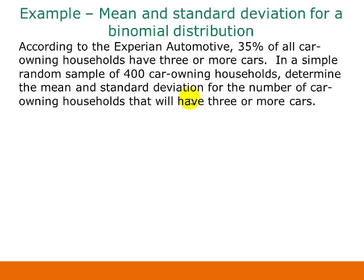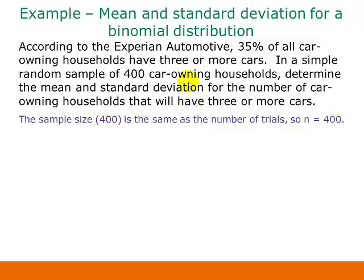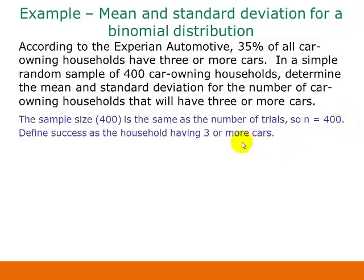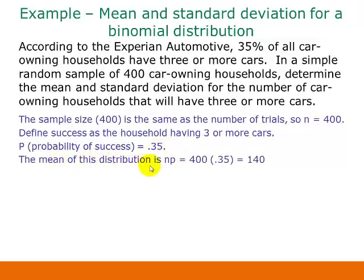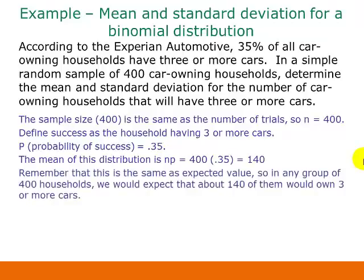Let's go back to our example dealing with car-owning households. If we have a simple random sample of 400 car-owning households, determine the mean and standard deviation for the number of car-owning households that will have three or more cars. We do have a binomial experiment here, and our sample size is the same as our number of trials, so n equals 400. We're going to define success as the household having three or more cars, and our probability of success on any one trial is 0.35. We can calculate the mean as n times p, or 400 times 0.35, which gives us 140.